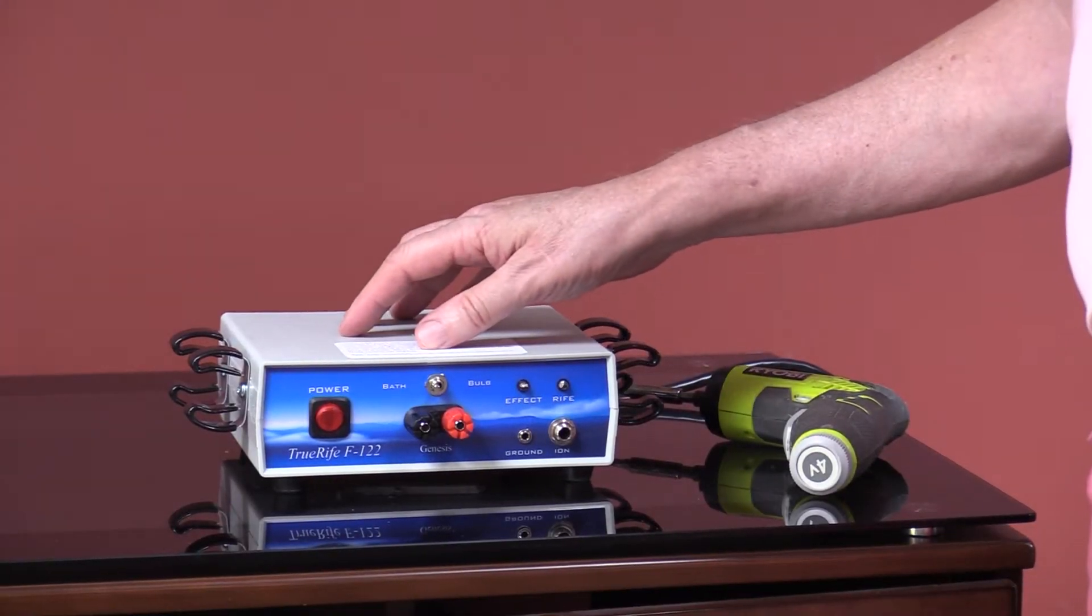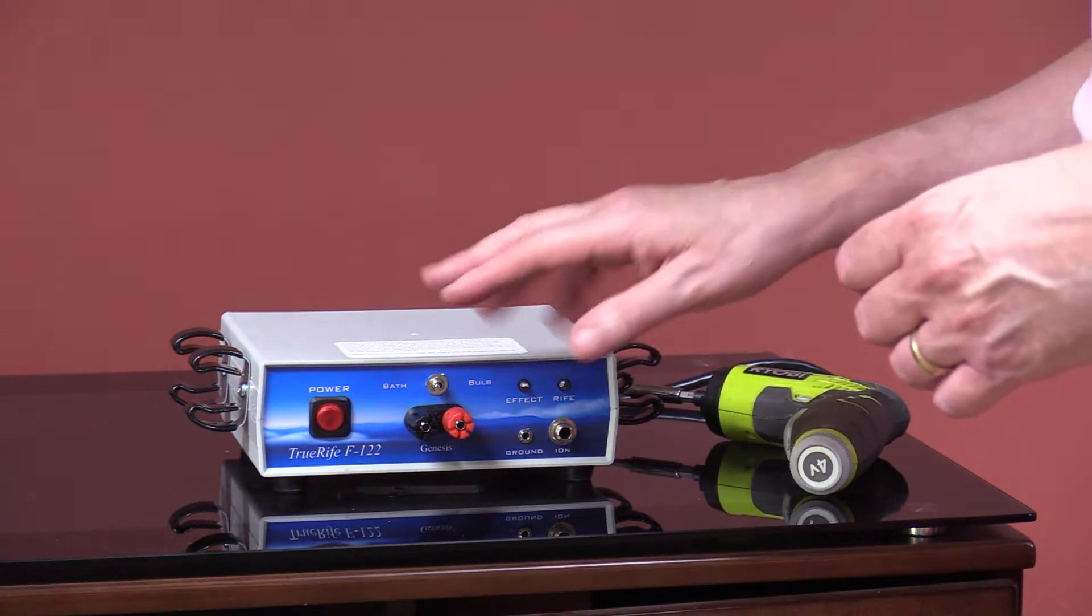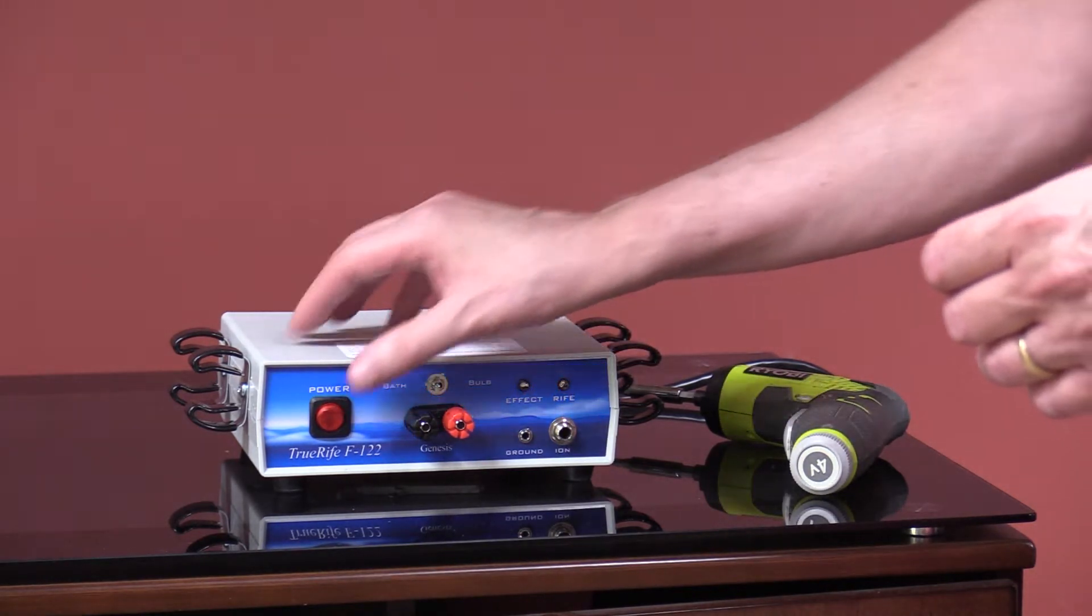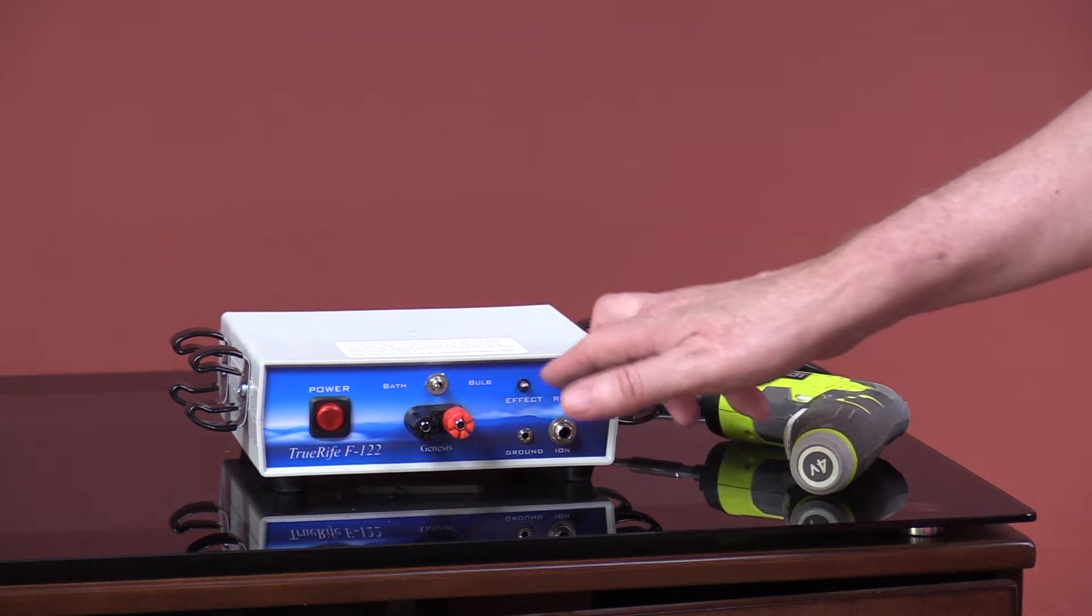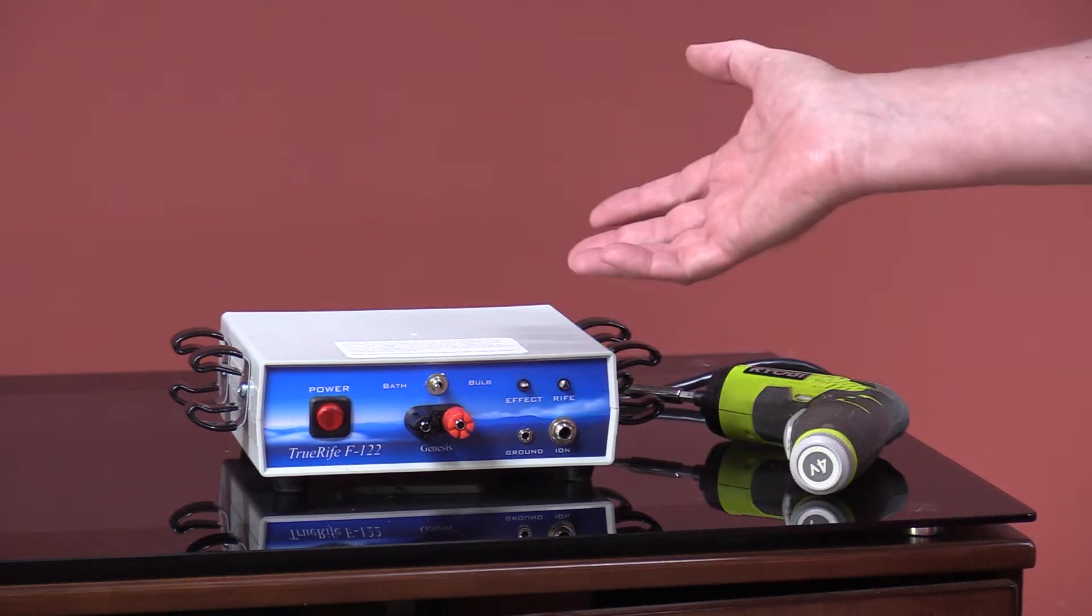We're going to talk about changing the transistor in an F122. What will happen is you may have been running a program, and the next time you go to run one you turn on the machine and these lights don't work—the right light and the effect light—and of course nothing comes out of the bulb with the foot bath.